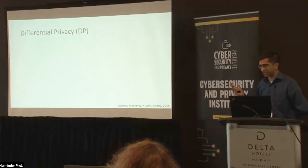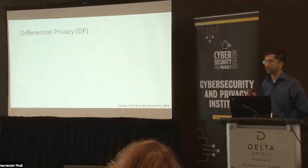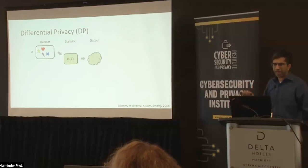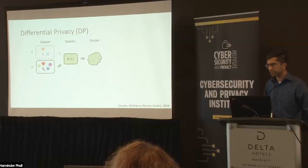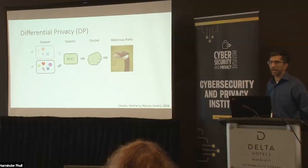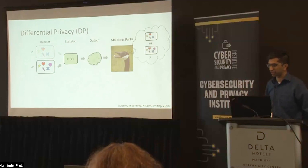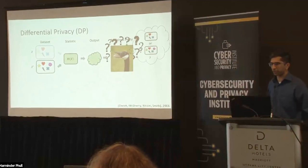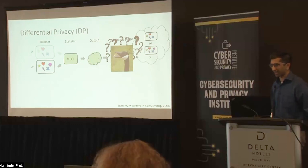I'm going to give you an illustration of how differential privacy works. We imagine there's some sensitive dataset fed into a statistic or algorithm, and it produces an output. Alternatively, a different dataset — with one change in it — is fed into the statistic and produces an output. A malicious party looks at the output and tries to figure out what was the input: was it x or x prime — was this one data point in it or not? If the malicious party is unable to identify whether it was x or x prime better than taking a random guess, then we say the statistic is differentially private.